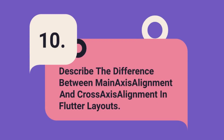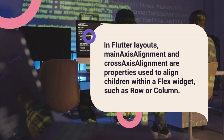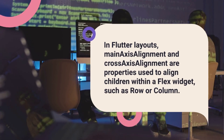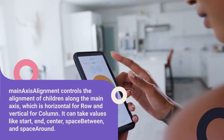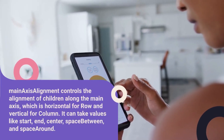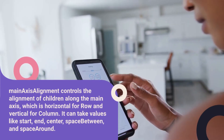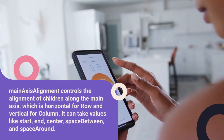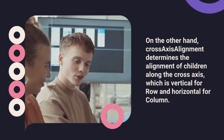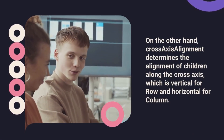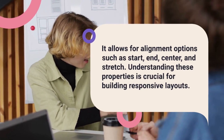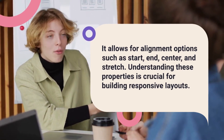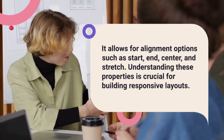Question 10: Describe the difference between main axis alignment and cross-axis alignment in Flutter layouts. In Flutter layouts, main axis alignment and cross-axis alignment are properties used to align children within a flex widget, such as Row or Column. Main axis alignment controls the alignment of children along the main axis — horizontal for Row and vertical for Column — and can take values like start, end, center, space between, and space around. Cross-axis alignment determines the alignment of children along the cross-axis — vertical for Row and horizontal for Column — with options such as start, end, center, and stretch. Understanding these properties is crucial for building responsive layouts.